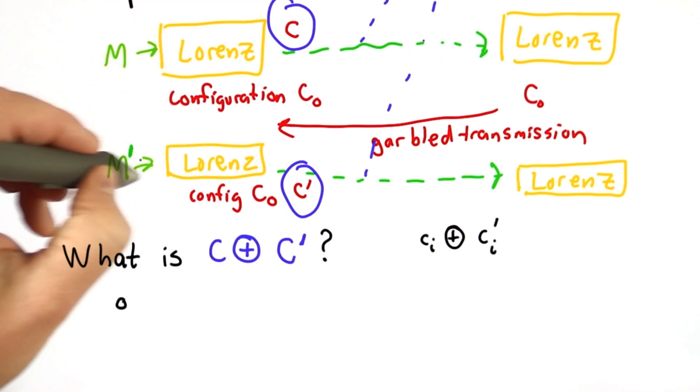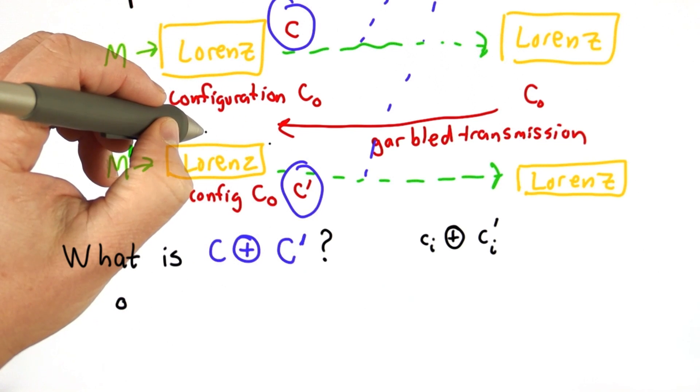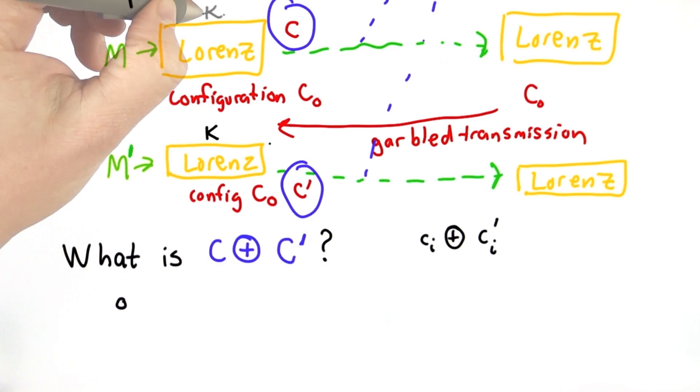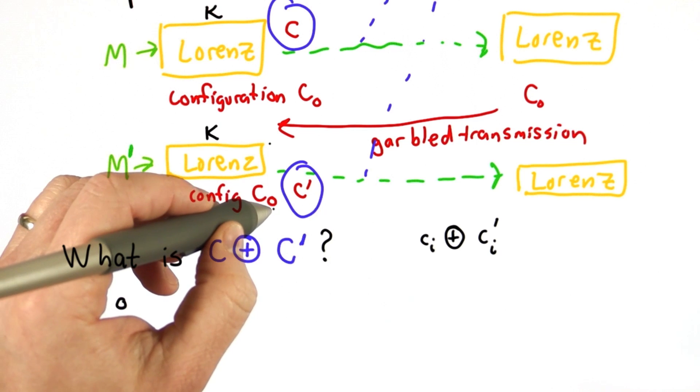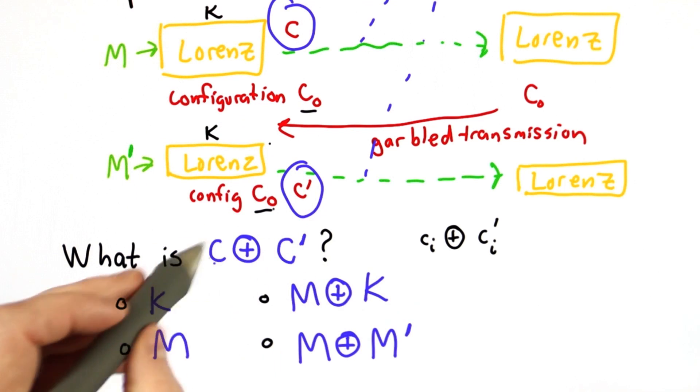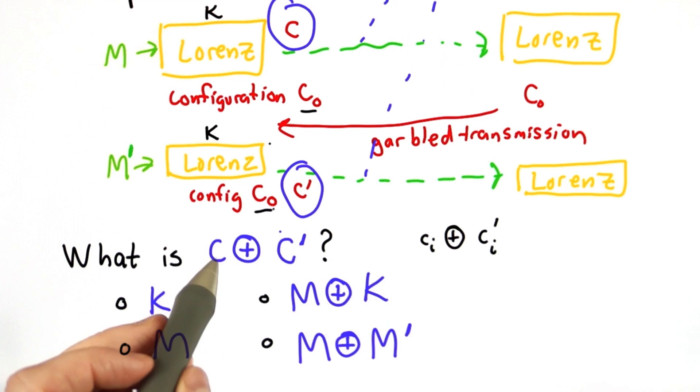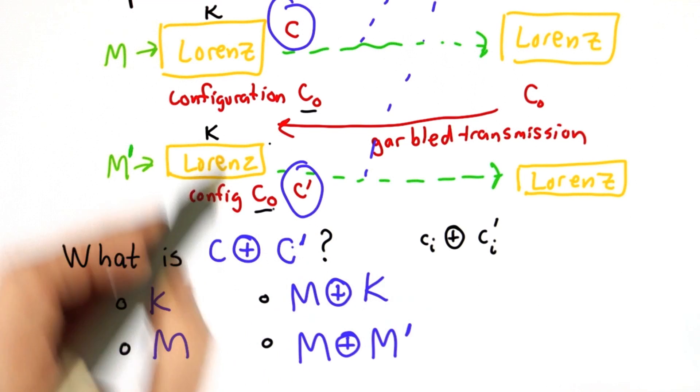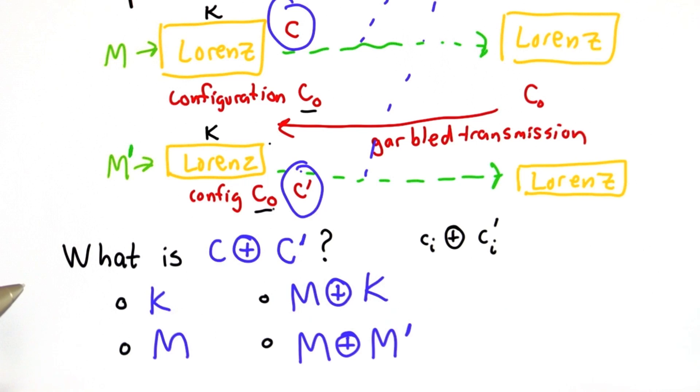The key that the machine generates, we'll call K. That's the key the machine generates starting from configuration C0. So which one of these is the value that the interceptor would get by XORing the two intercepted ciphertexts?